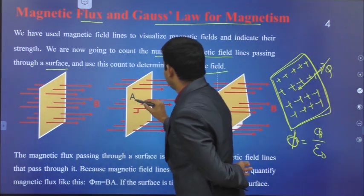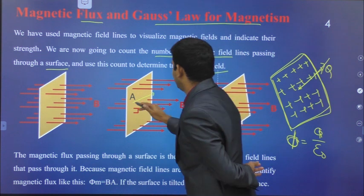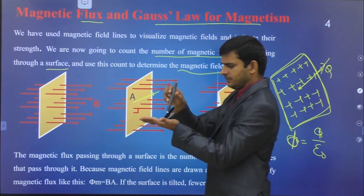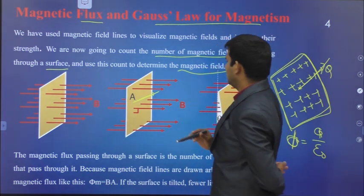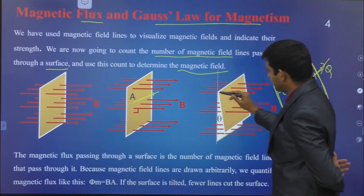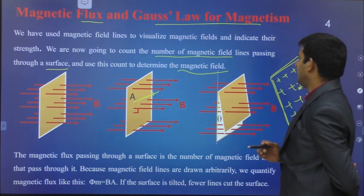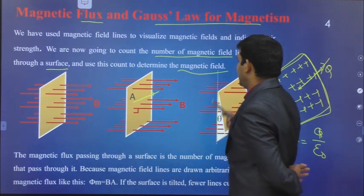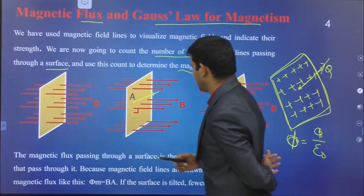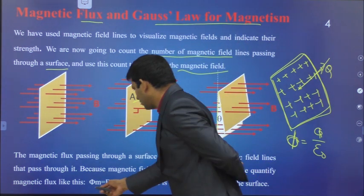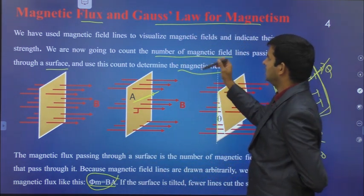Observe here — this is vector A, and how many magnetic lines of force are passing? When comparing, this is the vector normal to the plane. Magnetic lines of force are passing, and this is normal to the plane. In the third case, it will tilt from this axis with an angle theta. Magnetic flux passing through a surface is the number of magnetic lines passing in this surface. That is represented as phi_M = B · A, the applied magnetic field and A is the area.